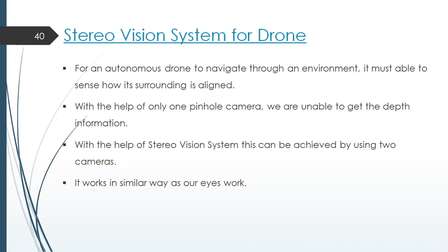Now let's dive deep into stereo vision system for a drone. For an autonomous drone to navigate through an environment, it must be able to sense how its surrounding is aligned. With the help of only one pinhole camera, we cannot get the depth information. With the help of stereo vision system, it can be achieved by using two cameras. It works in a similar way as our eyes work.